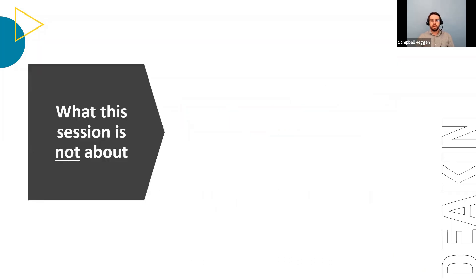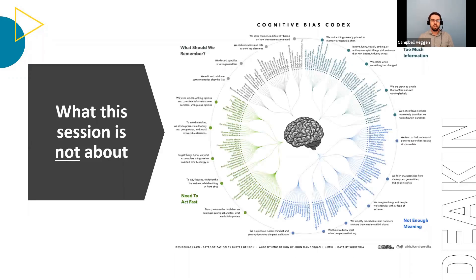I want to start by briefly outlining what you can and can't expect from this session. This graphic represents an attempt to classify the 200 or more behavioural biases currently listed on Wikipedia. While that list represents a fairly impressive body of research, the graphic is also useful in identifying how many of these apparent biases are not necessarily unique, but rather often just symptoms of more general factors which may affect judgement and decision-making. Trying to overcome individual biases is often a bit like trying to treat the symptom rather than the underlying cause.